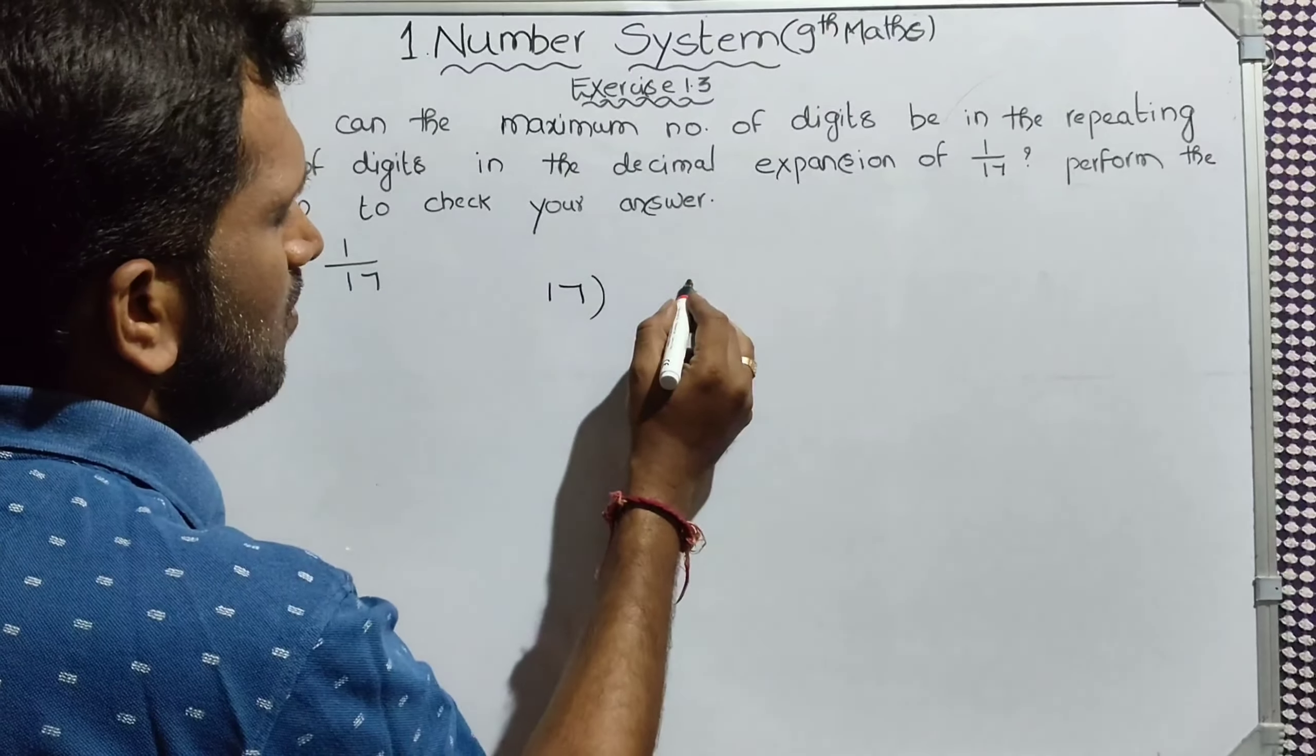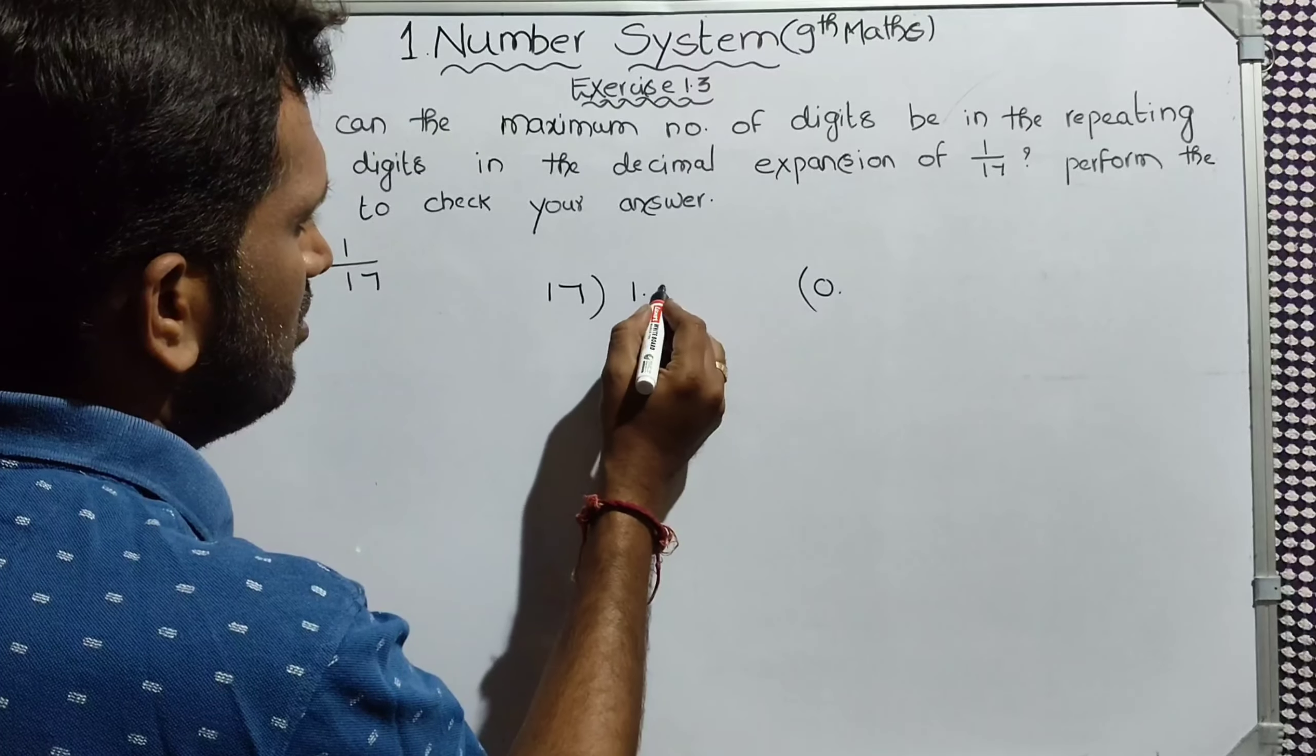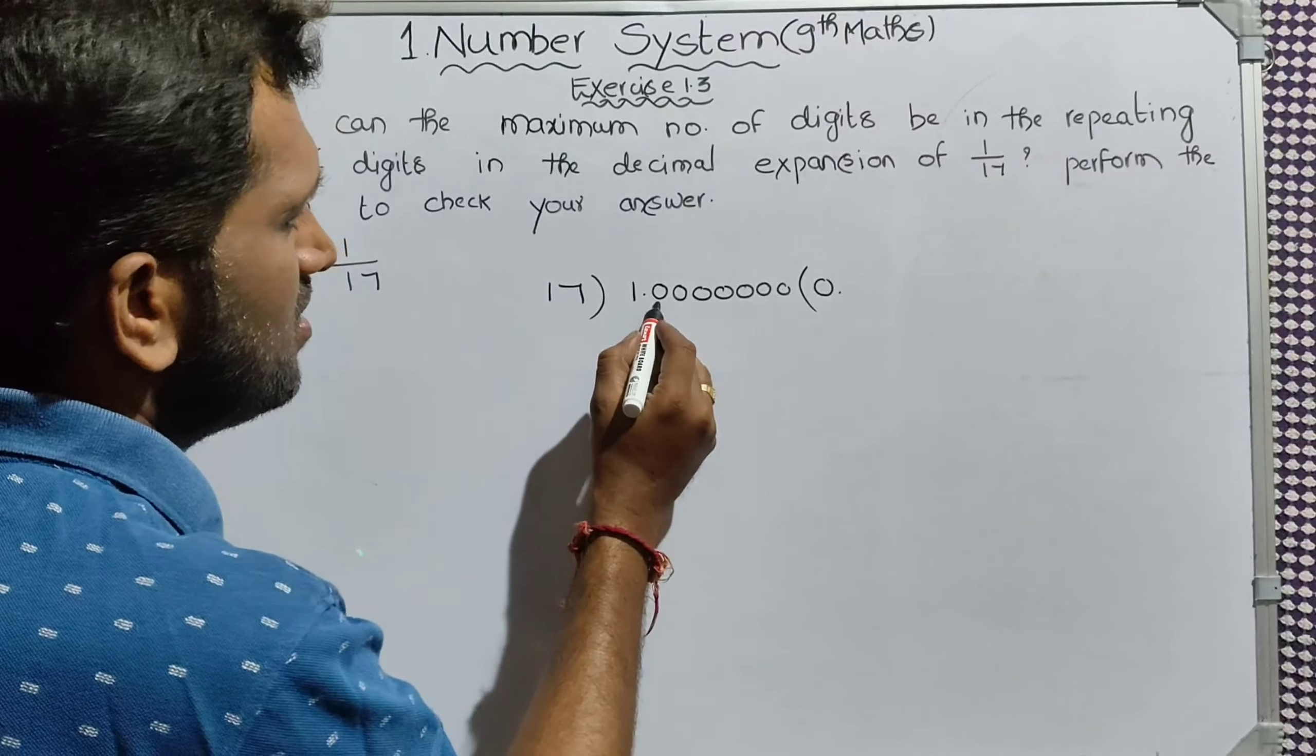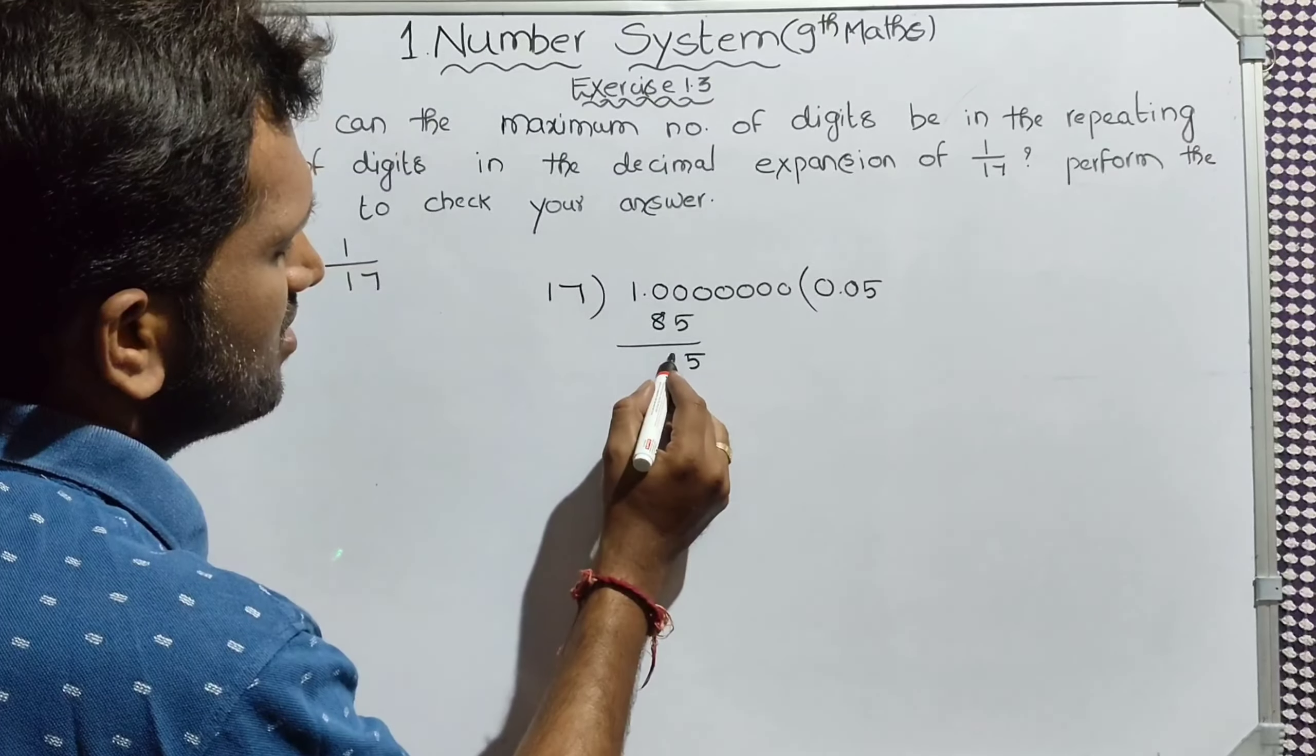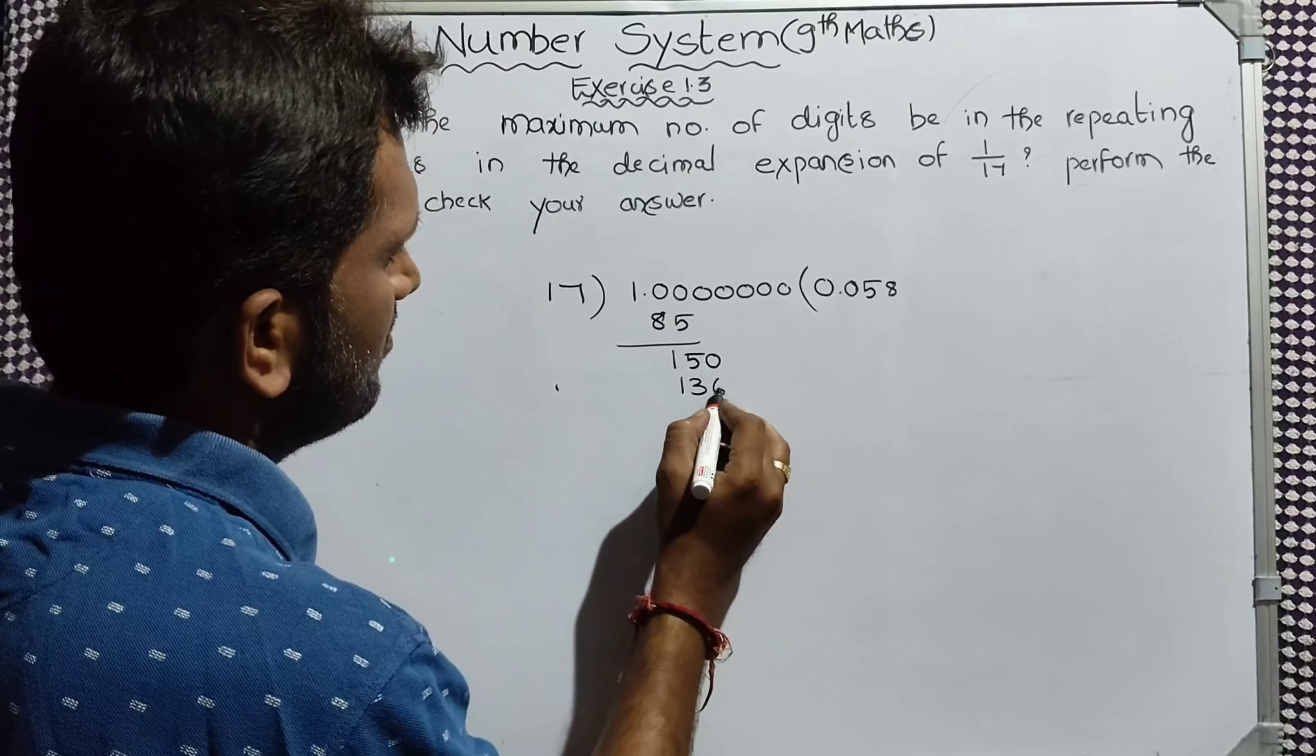Solution: 1 by 17. 17 into 1. On divide: 0 point. Next, 17 into 1.0.